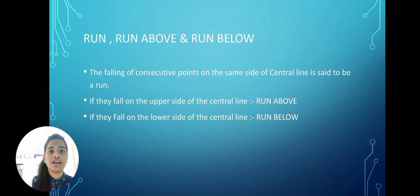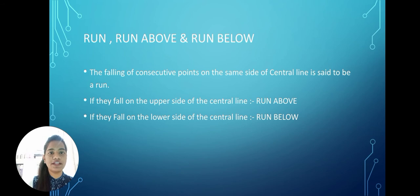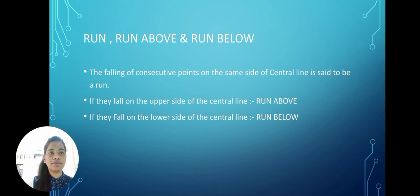The next terms are run, run above, and run below. A run means the falling of consecutive points on the same side of the center line. If all these consecutive points fall on the upper side of the center line, it is called a run above. Similarly, if all these consecutive points fall on the lower side of the center line, it is called a run below.